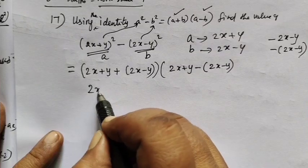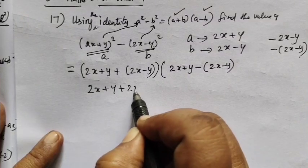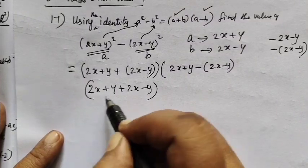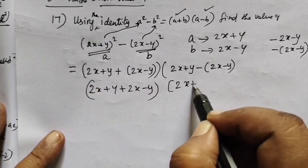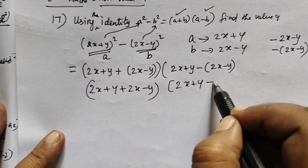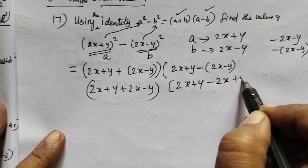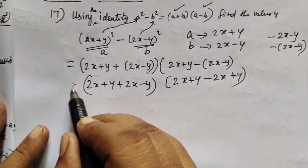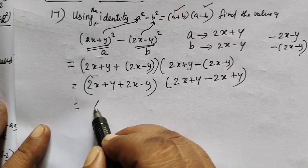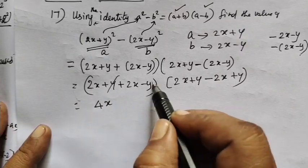2x plus y. The value of b equals b, 2x minus y. The value of b. Minus b, minus b, plus b. This value of b, 2x plus b, 4x plus y minus b.